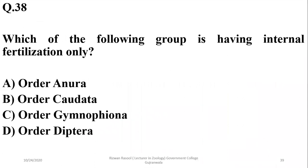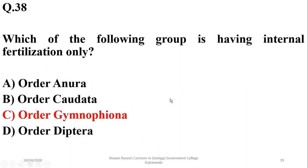Which of the following groups has internal fertilization only? In anurans there is external fertilization. Caudata also has external fertilization. Gymnophiona has internal fertilization, but Diptera (flies) also have internal fertilization. As far as amphibians are concerned, the answer is C (Gymnophiona); however, if the question is not limited to amphibians, both C and D are correct, as both have internal fertilization.